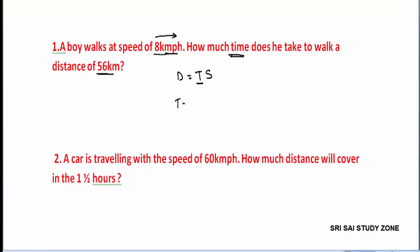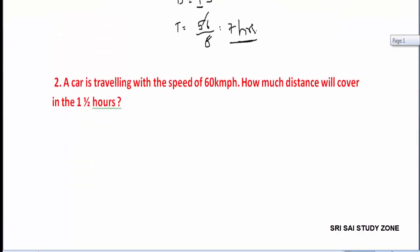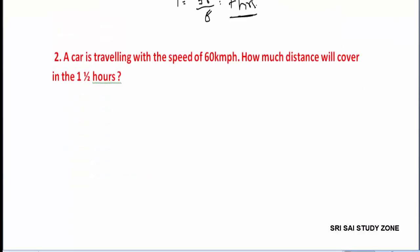So time equals distance divided by speed, which is 56 divided by 8. Since 8 sevens are 56, the answer is 7 hours.